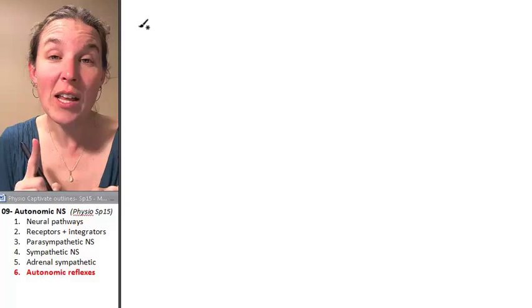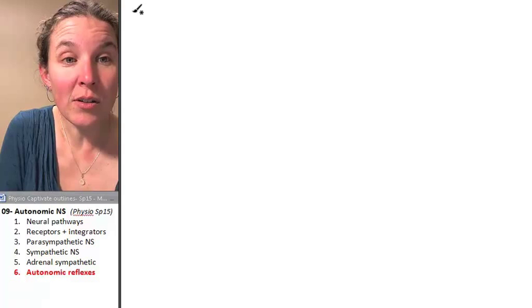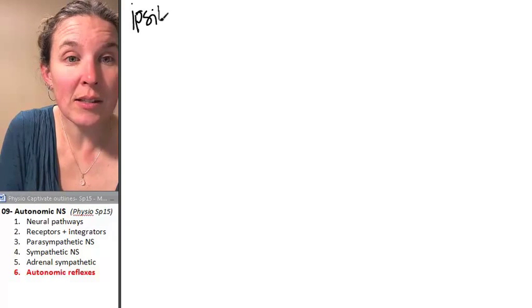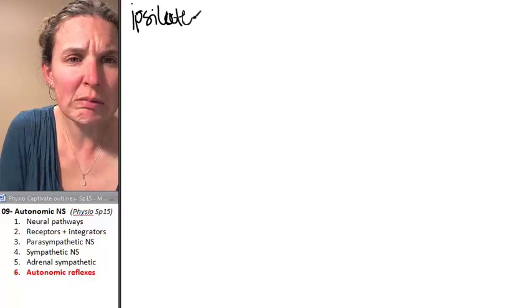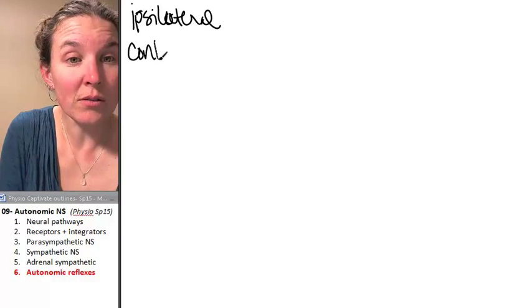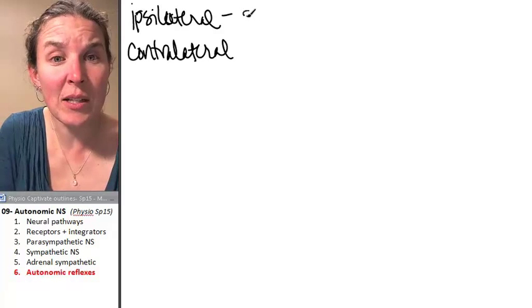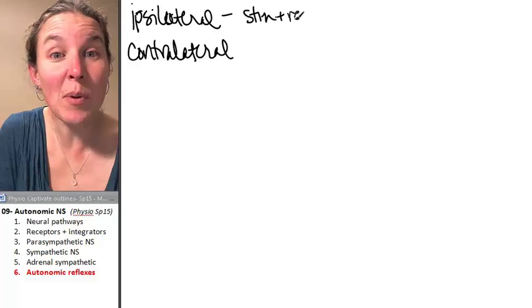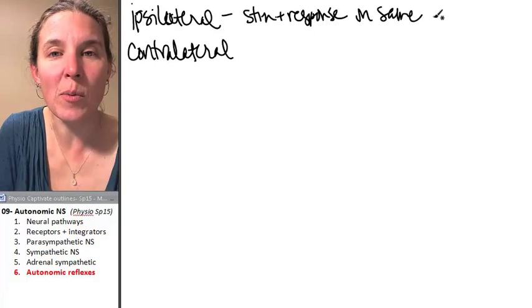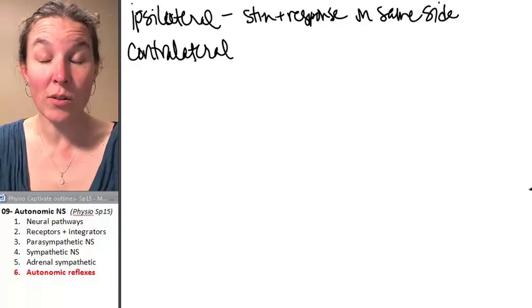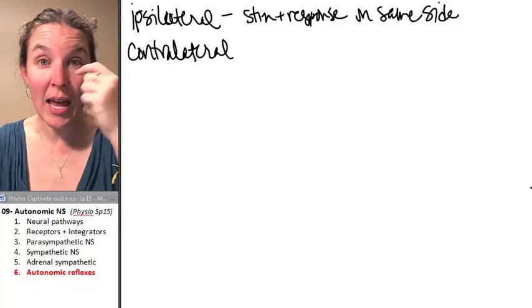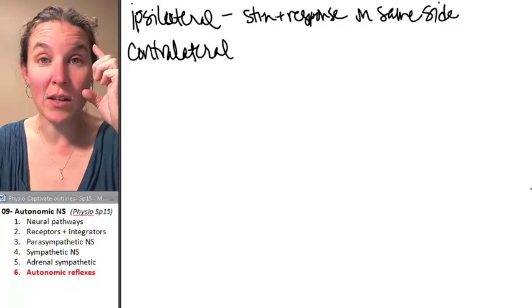First of all, reflexes can be ipsilateral or contralateral. An ipsilateral reflex is one where the stimulus and response happen on the same side of the body. The stimulus comes in on one side, and the response happens on the same side.